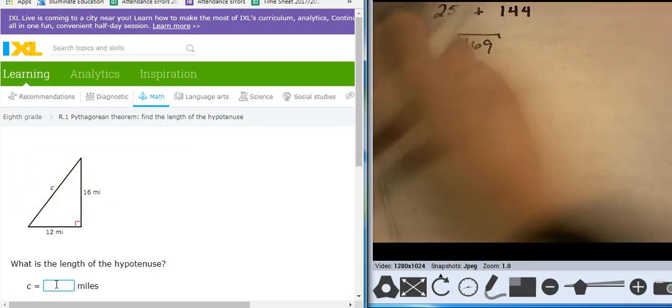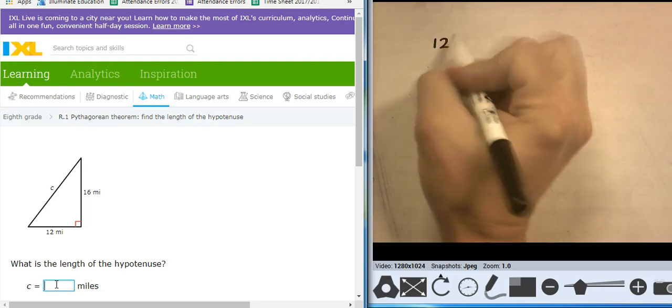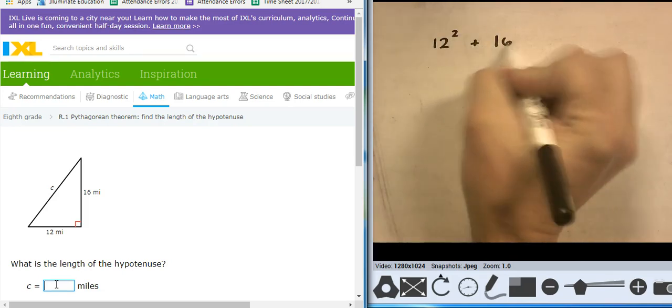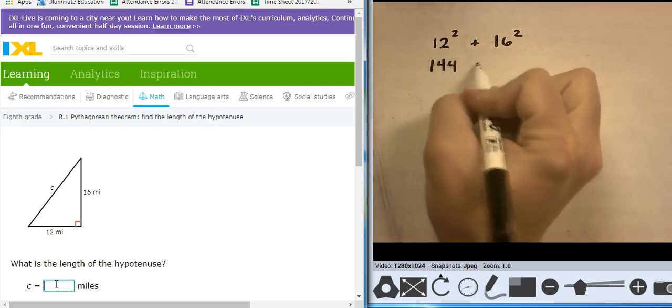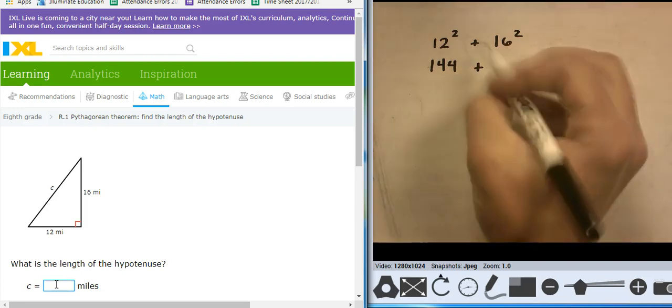Let's do another one. I'm going to go 12 squared plus 16 squared. So 12 squared plus 16 squared. That's 144. Plus, I'm using a calculator to find 16 squared. 256.